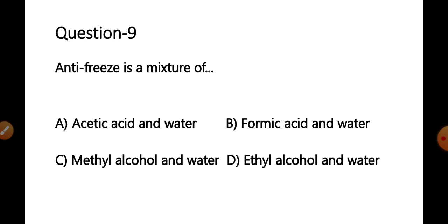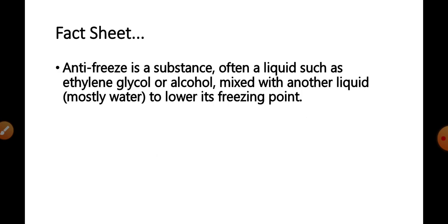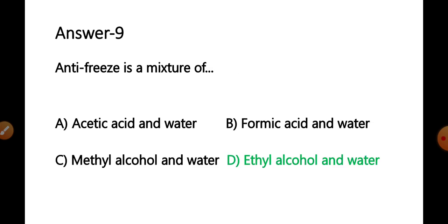Question 9: Antifreeze is a mixture of — options: A) acetic acid and water, B) formic acid and water, C) methyl alcohol and water, D) ethyl alcohol and water. Antifreeze is a substance, often a liquid such as ethylene glycol or alcohol, mixed with water to lower its freezing point. So antifreeze is a mixture of ethylene glycol or alcohol with water. The correct answer is option D — ethyl alcohol and water.